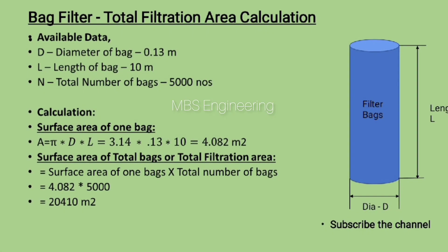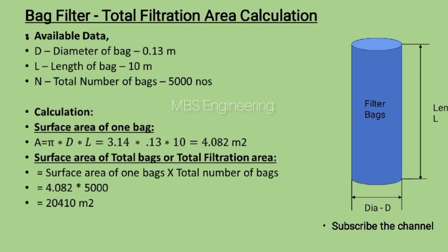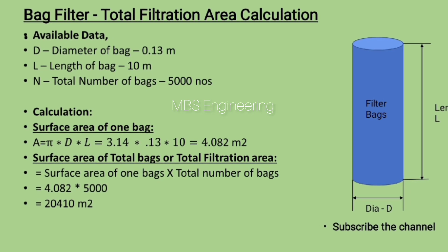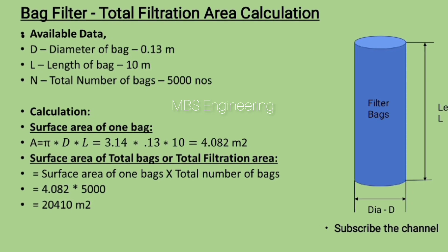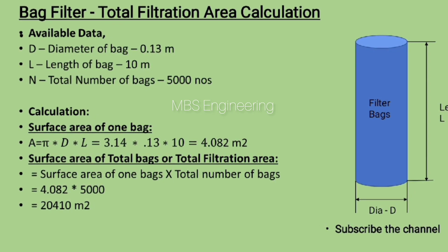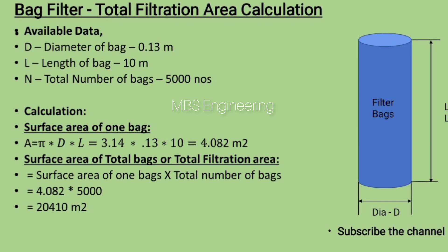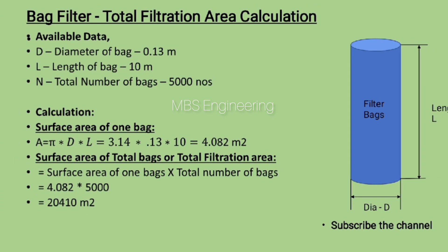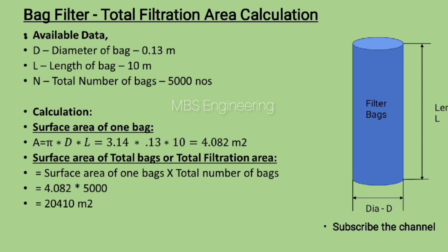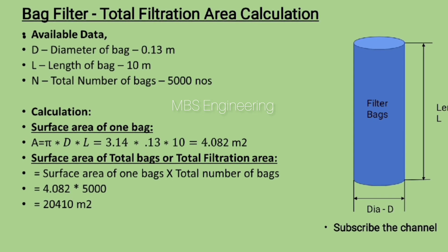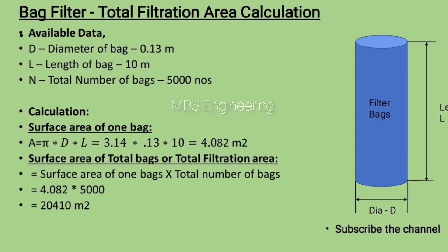Now we calculate the total filtration area of the baghouse using the available data: d (diameter of bag) = 0.13 meters, l (length of bag) = 10 meters, and n (total number of bags) = 5000.